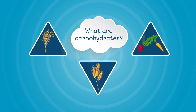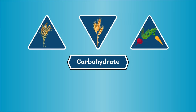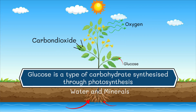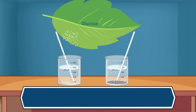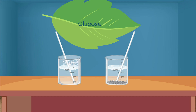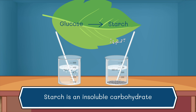What are carbohydrates? Carbohydrate is the primary source of energy for organisms and is a compound of carbon, hydrogen, and oxygen. Glucose is one of the types of carbohydrates synthesized through photosynthesis. Glucose is soluble, so it cannot be stored. Therefore, immediately after the formation of glucose, it is converted to starch, which is an insoluble carbohydrate.